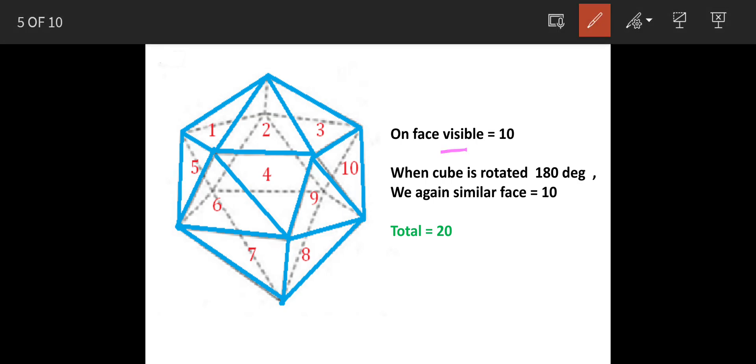On the face which is visible to us, there are ten triangles. So this is the top portion of the cube, and triangles are 1, 2, 3, then this cut portion itself has a triangle.